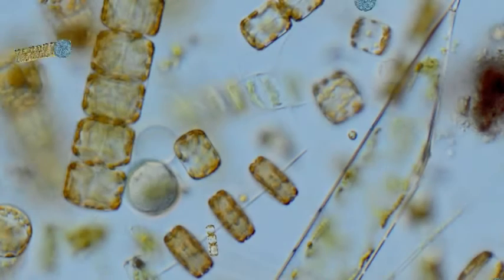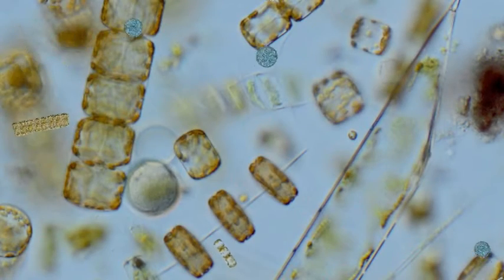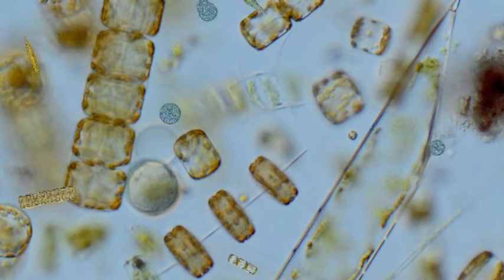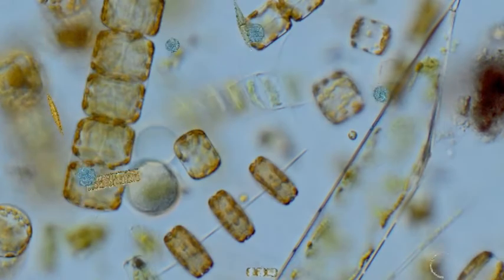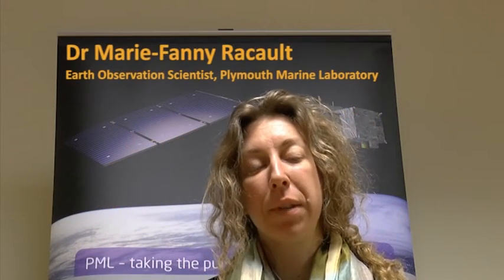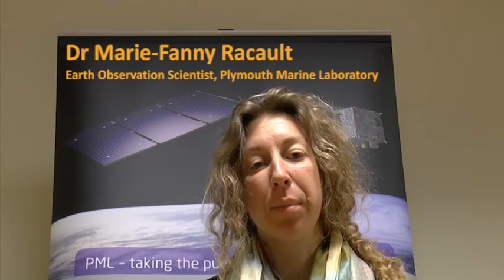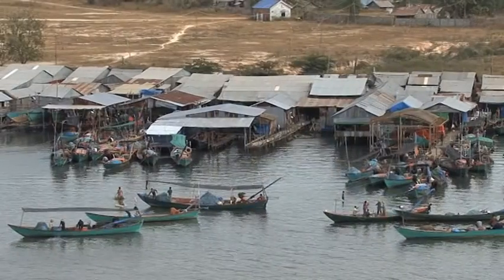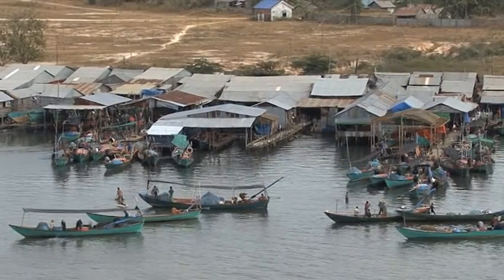Microscopic marine algae, or phytoplankton, form the base of the marine food chain. They provide a major source of food for the larvae of many coral reef species, for example, which in turn support fisheries and dependent human societies.